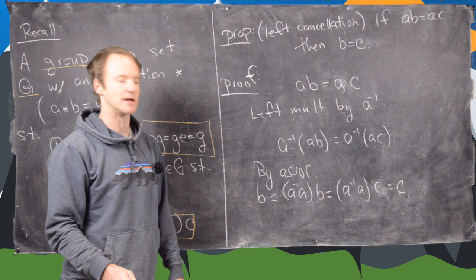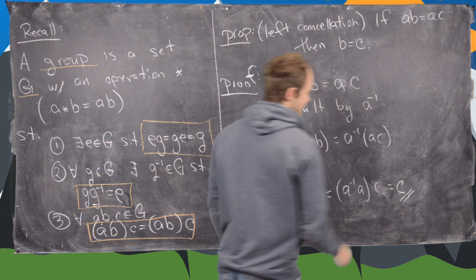So we've got it. The left cancellation rule and notice associativity was important in this case. We actually wouldn't have the left cancellation rule without associativity. All right, this is a great place to end the video.